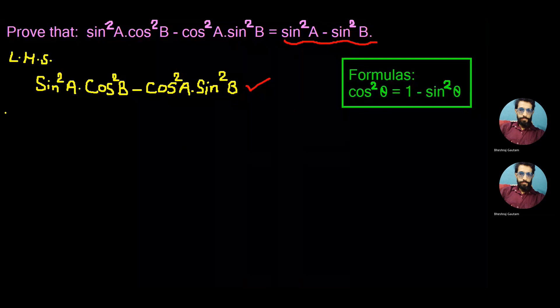We continue this by converting cos in the form of sin as you see on the right side of the page. That is cos²θ = 1 - sin²θ. Let's apply the same formula to both cos²B and cos²A and continue.